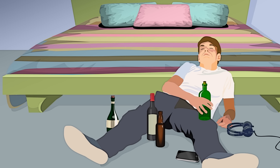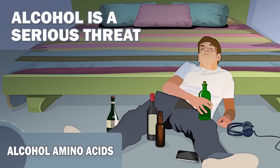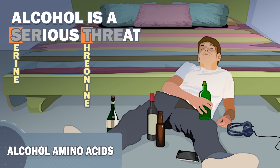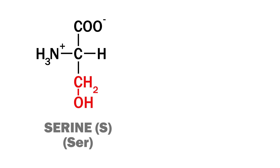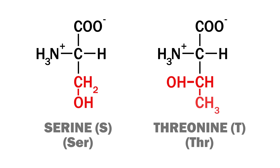Two of the amino acids are alcohols. While alcohol is a serious threat, memorizing these amino acids will be a serious treat. Serine and threonine have very easy abbreviations — the one-letter abbreviations are just the first letter of each amino acid, and the three-letter abbreviations are just the first three letters. The structure of threonine just has an extra methyl group attached to the carbon, making it chiral.